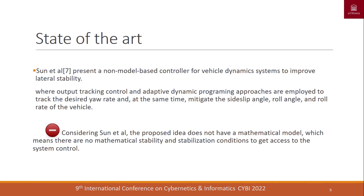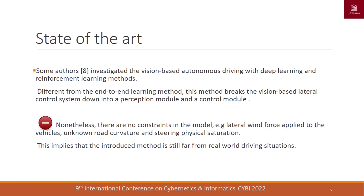Other authors present a model-based control to improve lateral stability, where output tracking control and adaptive dynamic programming approaches are employed to track the desired yaw rate while mitigating the side-slip angle, roll angle, and roll rate. The problem here is that the proposed idea does not have a mathematical model, implying no mathematical stability and stabilization analysis. Other authors investigated vision-based autonomous driving with deep learning and reinforcement learning; however, there are no constraints in the model — for example, lateral mean force, road curvature, and steering physical saturations — making the method still far from real-world driving situations.